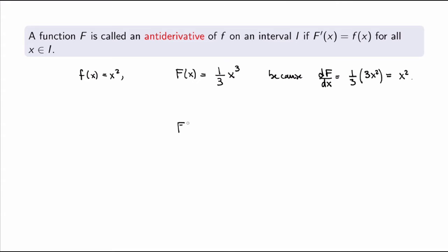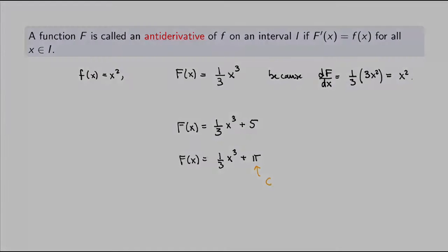But then what about the following functions? Instead of taking this one, I'll take one-third of x cubed plus five. Is it still an antiderivative of x squared? Yes it is, because if I calculate the derivative of the right-hand side, the derivative of a constant is always zero, so I still get x squared. In fact, I could add any constant — I could take one-third x cubed plus any arbitrary constant c, and I would still get an antiderivative. So it looks like this inverse process is not uniquely defined — there's a whole family of antiderivatives, and they all differ by addition of a constant.